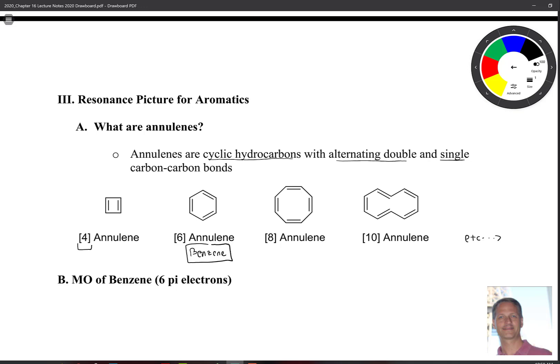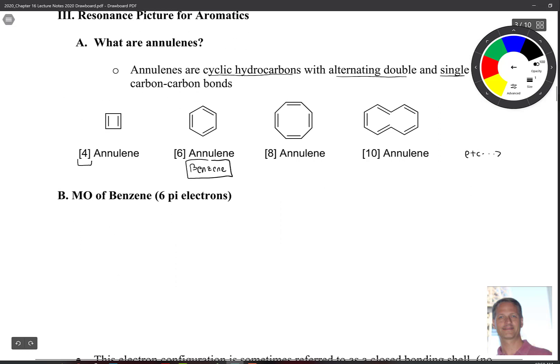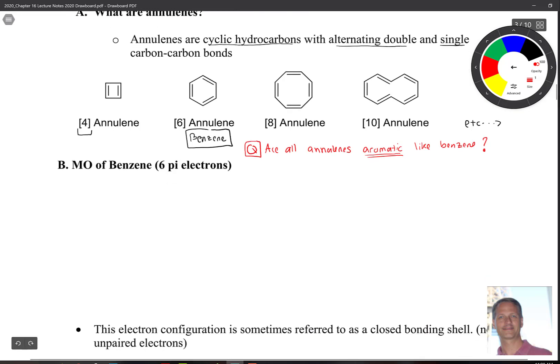So what I want to look at with you guys right now is the molecular orbital picture of benzene. One of the things we want to ask ourselves here - let's pose a question: Are all of these annulenes aromatic like benzene? Aromatic just means it has that special property of stability that we saw in that little diagram on the last page. The answer to this is a little bit complicated, but the short answer is no. So I want to look at the MO picture of benzene with you guys.